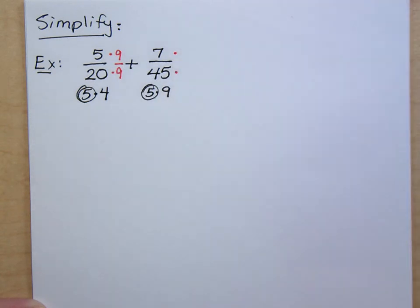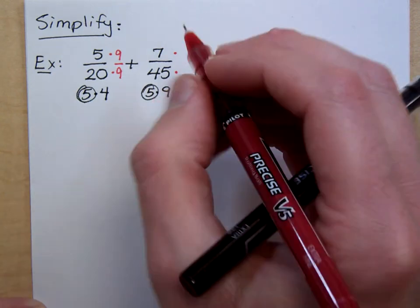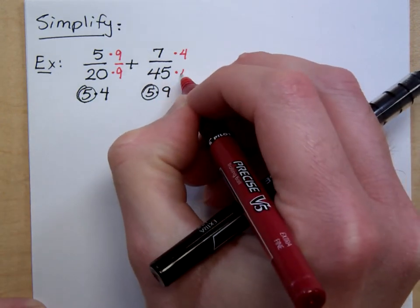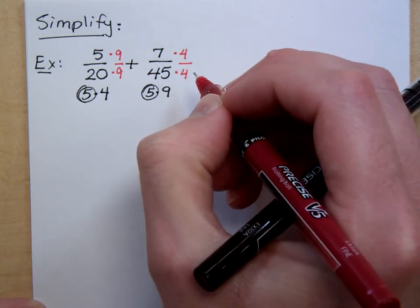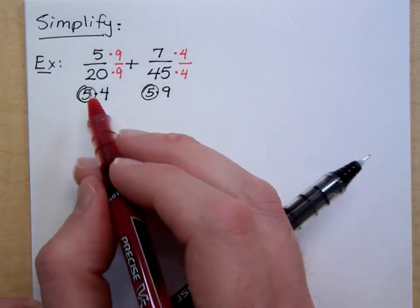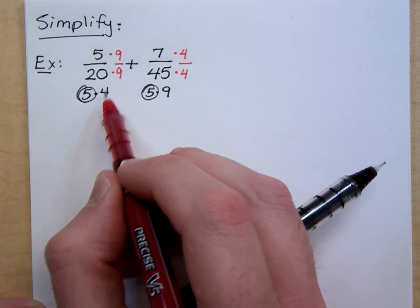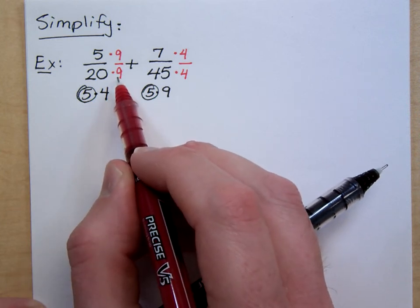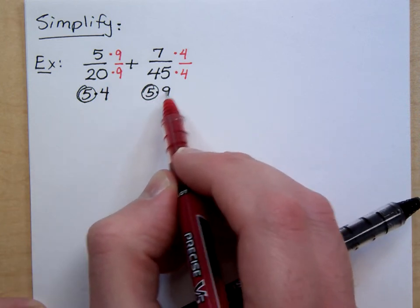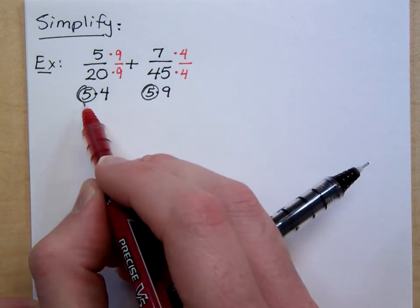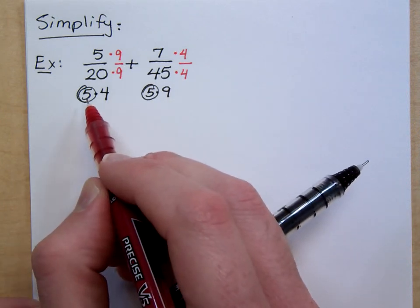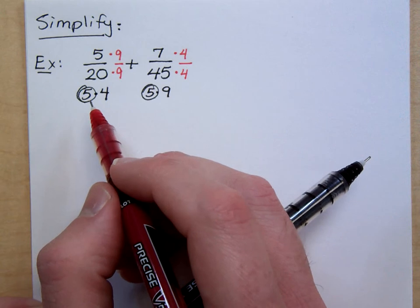What factor is missing for the 7 over 45? He's missing the 4 that this guy has. And if you don't believe that this is correct, check out the factors. The factors here would be 5 times 4 times 9. The factors here are 5 times 9 times 4. So, it's the same set of factors, just in a different order. And since it's multiplication, the order doesn't matter.